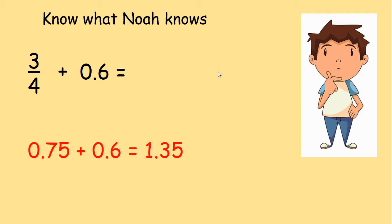Well done. 3 quarters as a decimal is 0.75. I'm going to add this to 0.6, which is going to give me 1.35. So the answer to 3 quarters add 0.6 would be 1.35. Well done if you managed to get that.